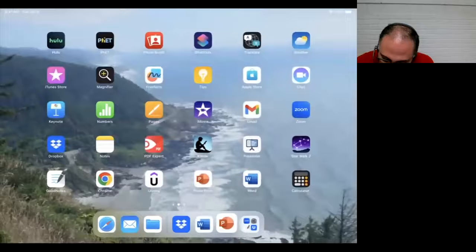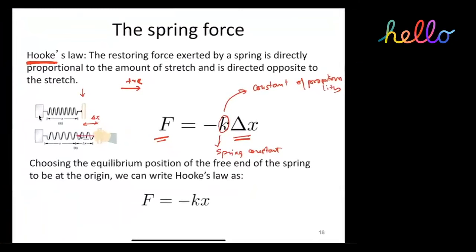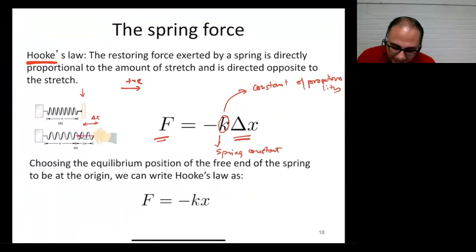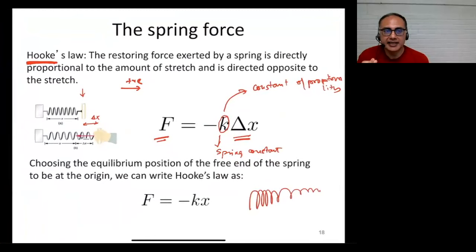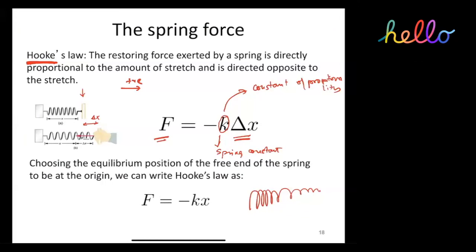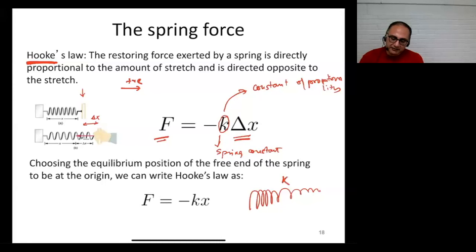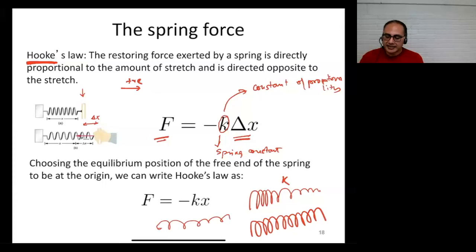A student asks: what if the spring has a different constant throughout — for example, if it's thick at one part and loose at another? Even then, the spring will have an overall spring constant. A non-uniform spring will still have its own overall k, which will be somewhere between the k values of its stiffest and loosest sections.